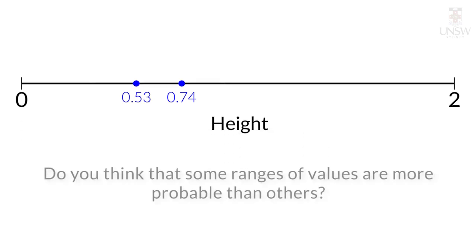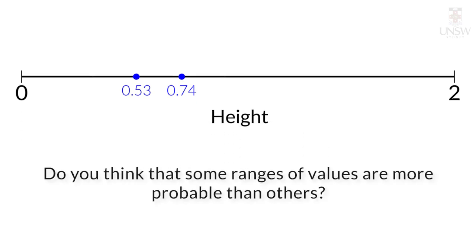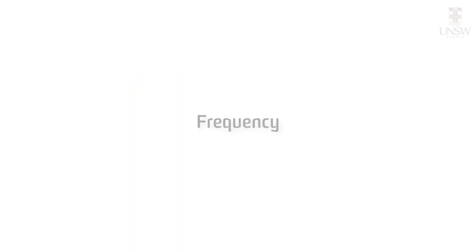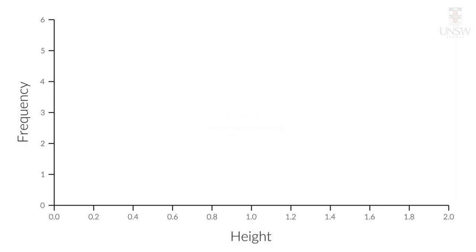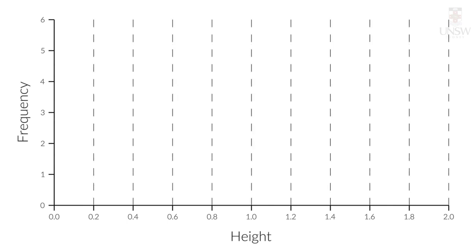Do you think that some ranges of values are more probable than others? How can we figure this out? Let's start by adding the frequency on the vertical axis. In this case, we will divide the horizontal axis into 10 bins, also known as cells, each with a width of 0.2. As you can see, in bins 3 and bins 4, there is a frequency of 1, because a dot's height with values in these bins has occurred once in our experiment so far.